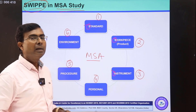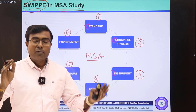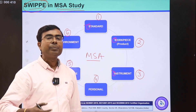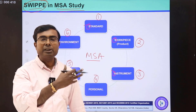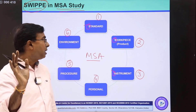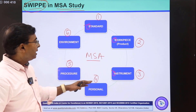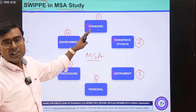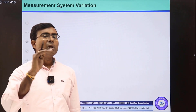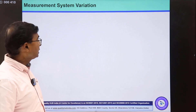We also need to have a good environment. When we talk about environment, it must be a controlled environment in terms of humidity, temperature, vibration, noise, and so on. So all these things are needed as a part of MSA study. Measurement system will also have variation, as we have already discussed.